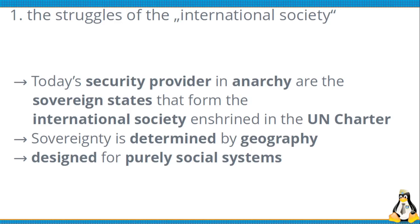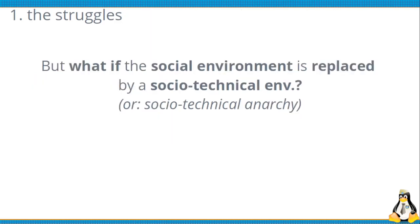The security providers of today are of course the sovereign states. They are determined by geography and their sovereignty, and they are designed for purely social systems. This leads to the question: what if the social environment is replaced by a socio-technical one? Socio-technical means blurred borders among technical systems like the internet and the social system — no longer clear or distinct points of transition, but persistent reciprocal interactions, influences, and impacts, so it's no longer possible to separate these two systems.